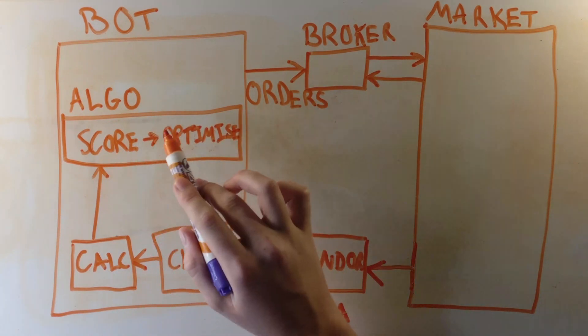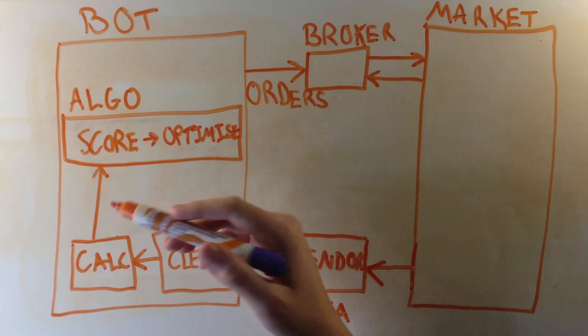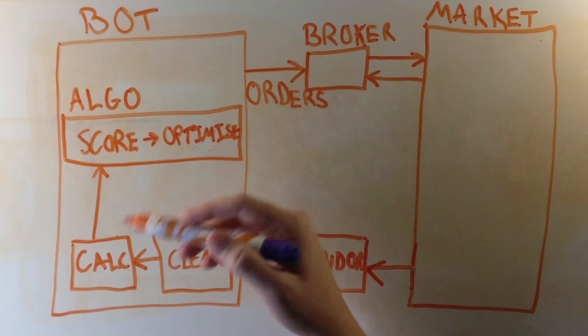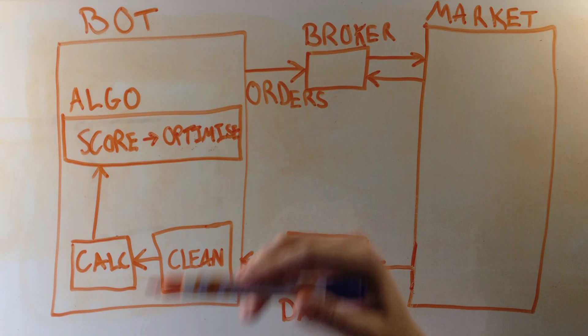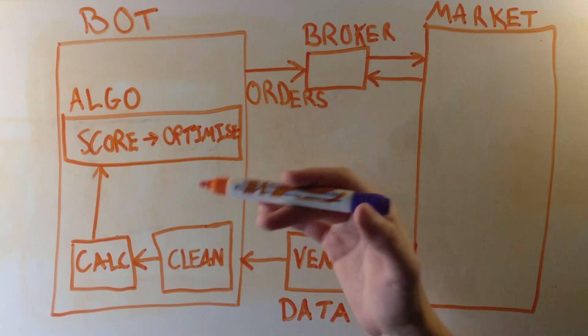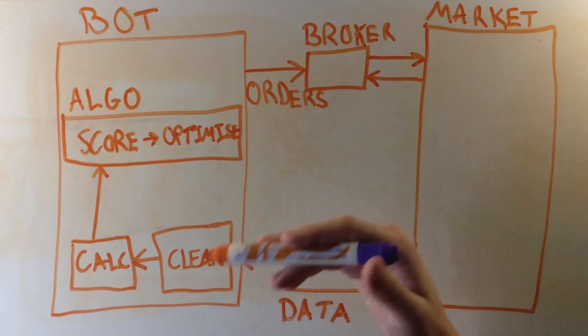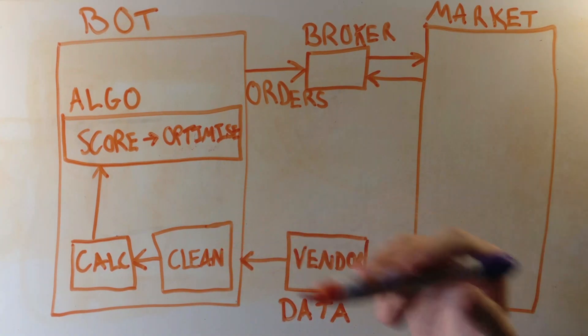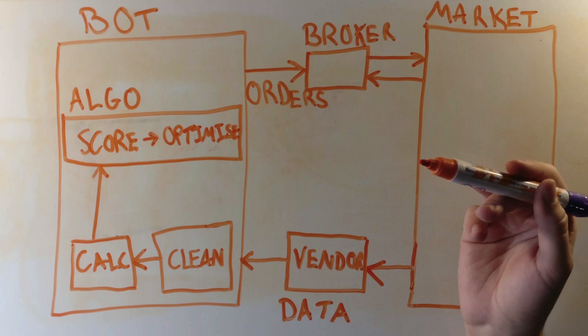Once it has given out these scores and ranked the stocks, it can determine the optimal portfolio to maximize the score and thus our returns. Now, if we had no constraints, the algorithm is going to tell us to put all our money in one stock, say Tesla. But this isn't great, as we are now at the mercy of one company or Elon Musk's tweets, perhaps.